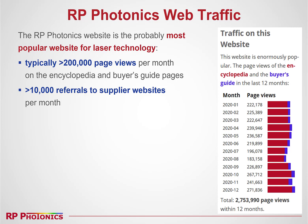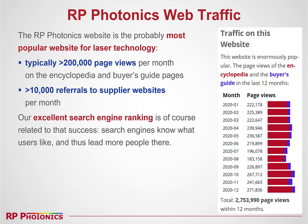We have enormous amounts of traffic. Typically we get well over 200,000 page views in a single month, mostly on the encyclopedia and partially on the buyer's guide pages. Our website also produces well over 10,000 referrals to supplier websites per month, mostly of course to our advertisers. Behind all that is our excellent search engine ranking — for example with Google. Search engines recognize what users like and thus they lead more and more people there.